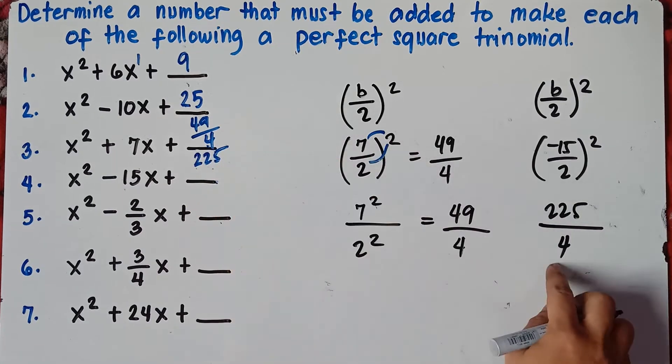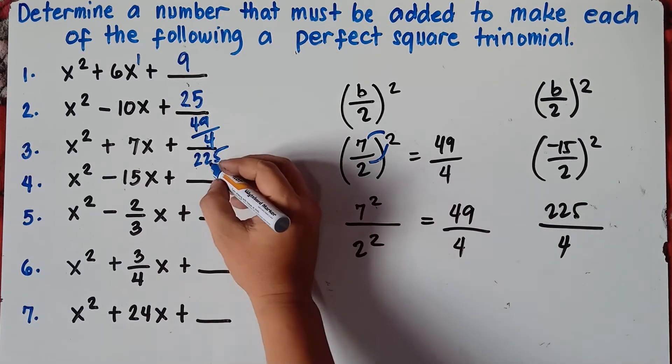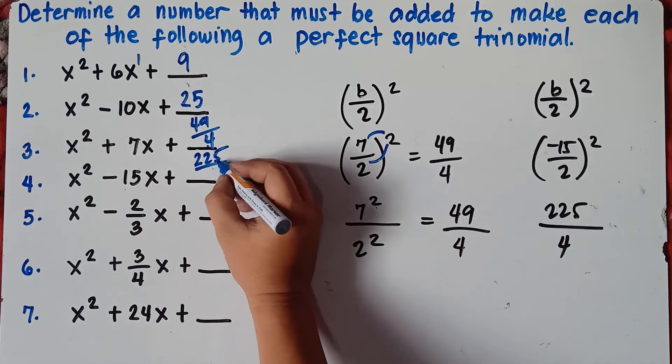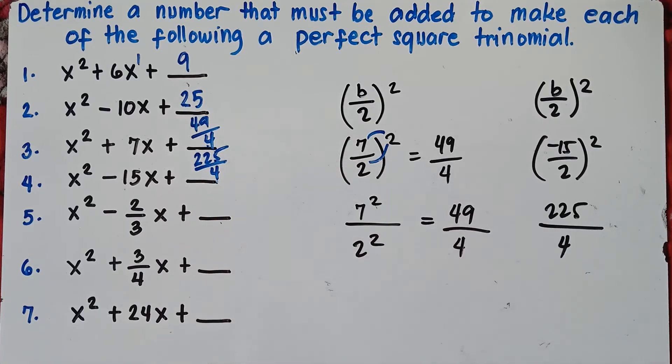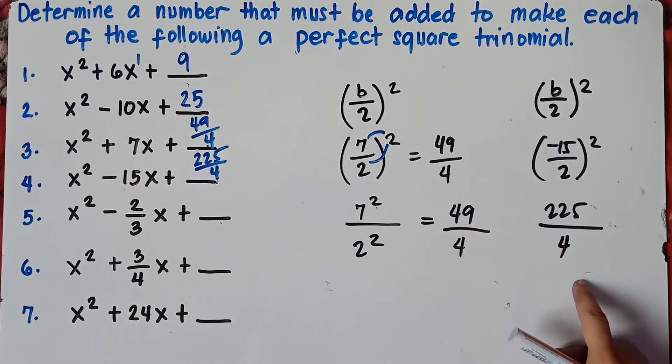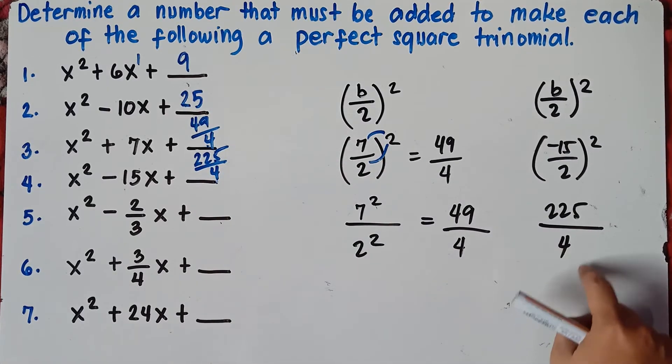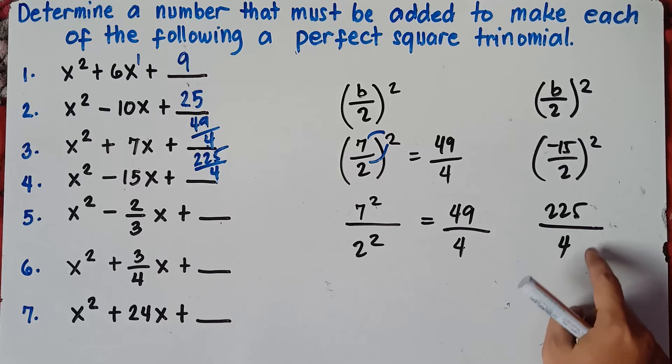Always check if we can reduce the fraction. If we can reduce, you need to reduce. Since we cannot reduce 225 over 4, this will be our final answer.